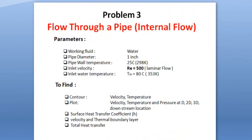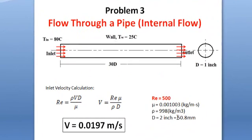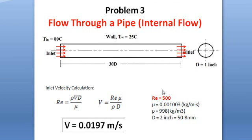If you see here the problem definition, we have a circular tube with a diameter of 1 inch and a length of 30D, that is 30 inches or two and a half feet. Our working fluid is water at 80 degrees Celsius flowing through this tube, and the tube wall temperature is 25 degrees C.